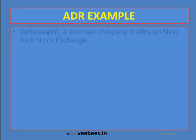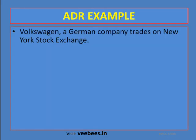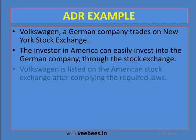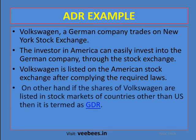For example, Volkswagen, a German company, trades on the US stock exchange. An investor in America can easily invest in the German company through its stock exchange listing. Volkswagen is listed on the American stock exchange after completing the required legal formalities. If shares of Volkswagen are listed in stock markets of countries other than the US, that would be through GDR.